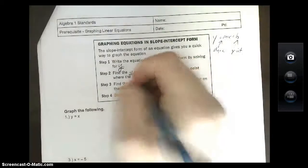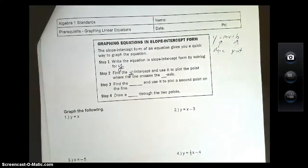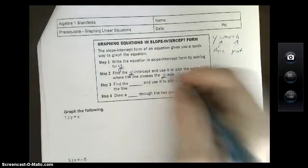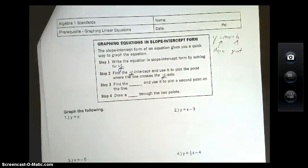Step 2: Find the y-intercept and use it to plot the point where the line crosses the y-axis, hence y-intercept where it crosses over.